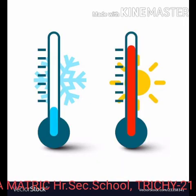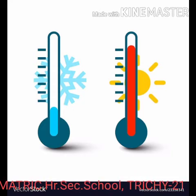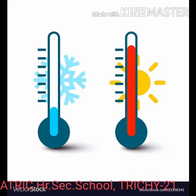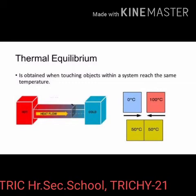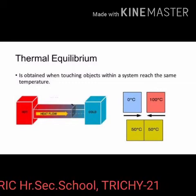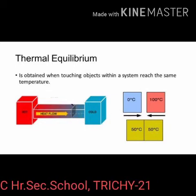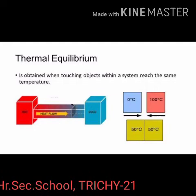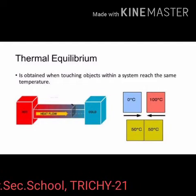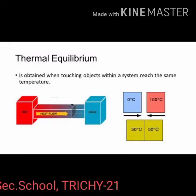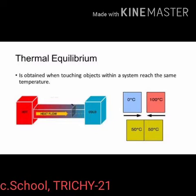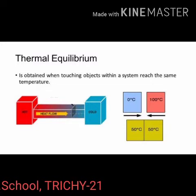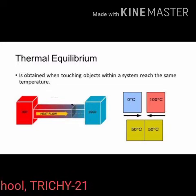Consider two bodies A and B. Let the temperature of A be higher than that of B. On bringing bodies A and B into contact, heat will flow from the hot body A to the cold body B. Heat will continue to flow until both bodies attain the same temperature. Two objects are said to be in thermal contact if they can exchange heat energy. Thermal equilibrium exists when two objects in thermal contact no longer affect each other's temperature.